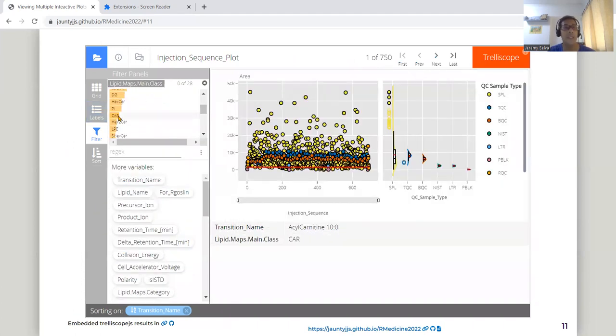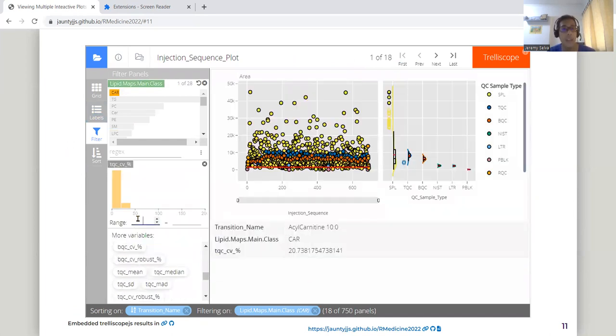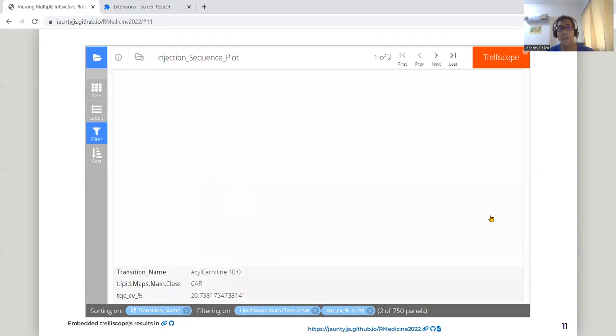For example, we can see just the acyl carnitines, for example, which there are 18 of them. And out of the 18 of them, we can see which one has high variation. So let us use this quality control TQC instead and see how it goes.